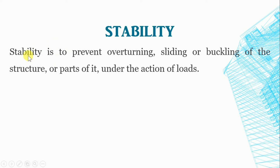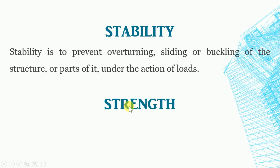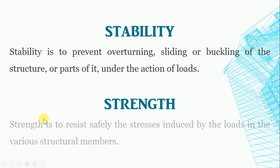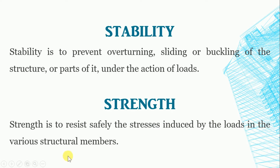Let's see them one by one. First, stability — stability is to prevent the overturning, sliding or buckling of the structure or parts of it under the actions of load. Second, strength — strength is to resist safely the stress induced by the loads in the various structural elements.